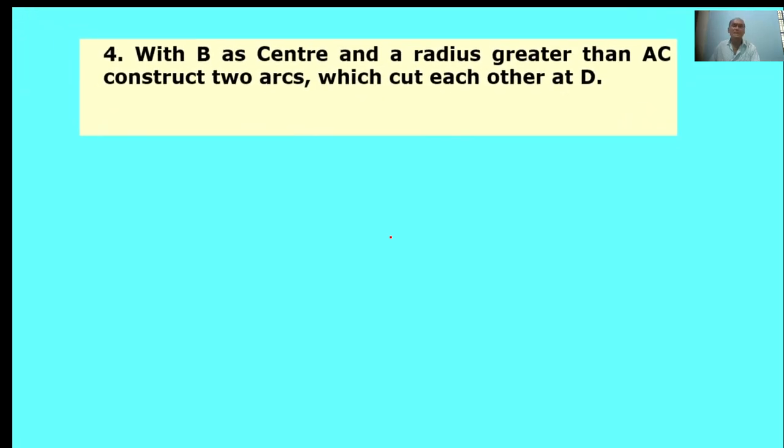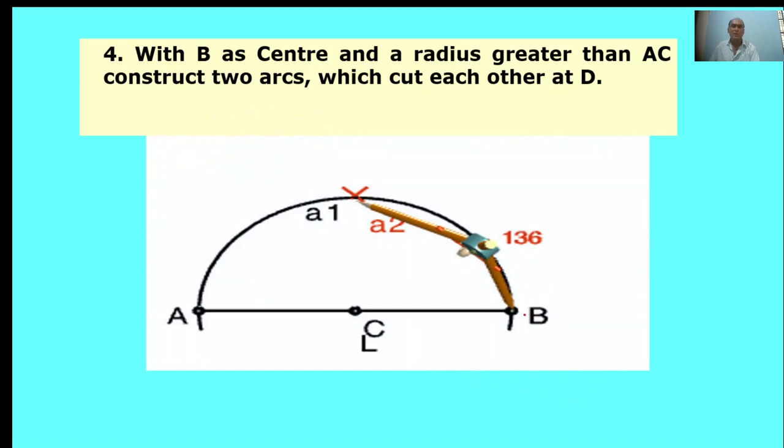With B as center and radius greater than AC, construct two arcs which cut each other at D. Here, B is the center point. Take the same radius and draw one arc. This arc cuts the previous arc. The intersect point is D. This is called point D.